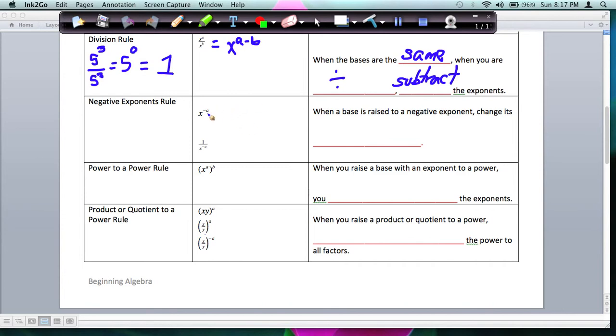For negative exponents, it's not considered in simplest form if you have a negative exponent. So basically, when a base is raised to a negative exponent, change its location, and you change the exponent from negative to positive. So x to the negative a would become 1 over x to the a. So you move it from the numerator to the denominator, because remember, this can be thought of as x to the negative a over 1. So I'll move it from the numerator to the denominator, and that exponent becomes positive. In this case, the negative exponent is in the denominator, so I'm going to move it to the numerator, and the negative a will become positive.